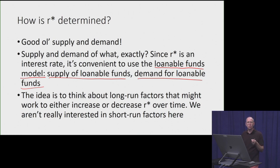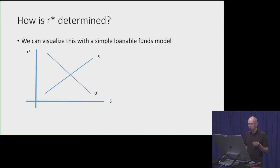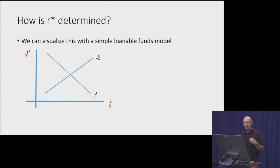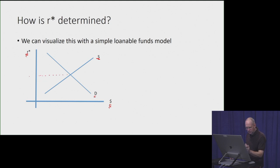We're not interested in short-term day-to-day things that change in financial markets; we're interested in longer-term factors. In this loanable funds model, the horizontal axis has the quantity of funds exchanged and the vertical axis has r-star. We have a standard upward-sloping supply of loanable funds curve and a downward-sloping demand for loanable funds curve. Suppliers bring more funds to market as r-star rises; borrowers want to borrow more at a lower real rate. Through standard supply and demand equilibrium, we get an equilibrium value of r-star.